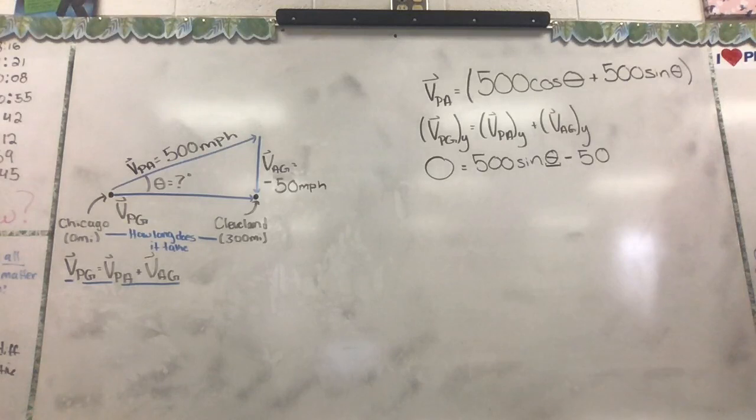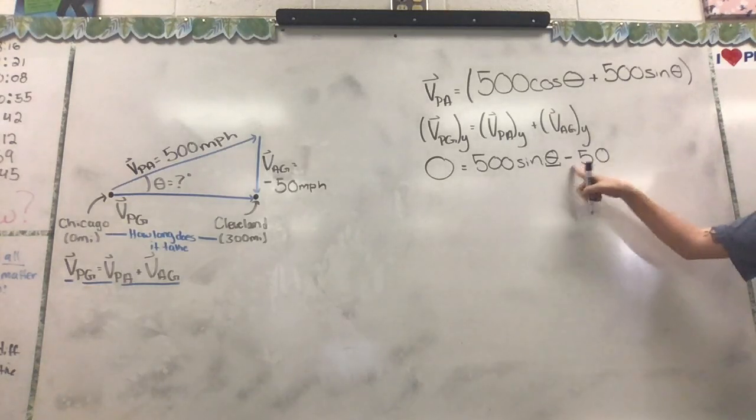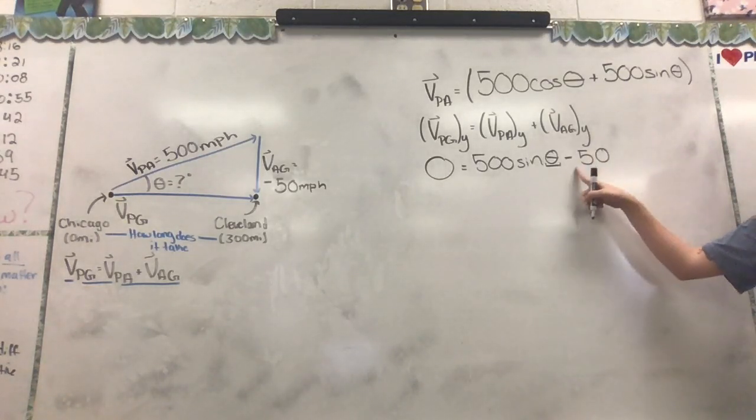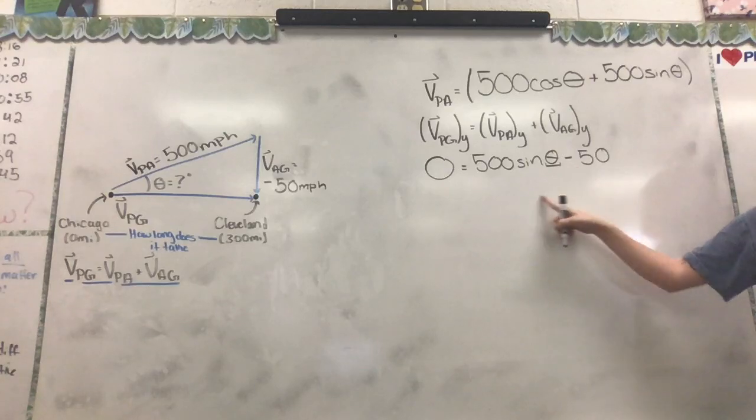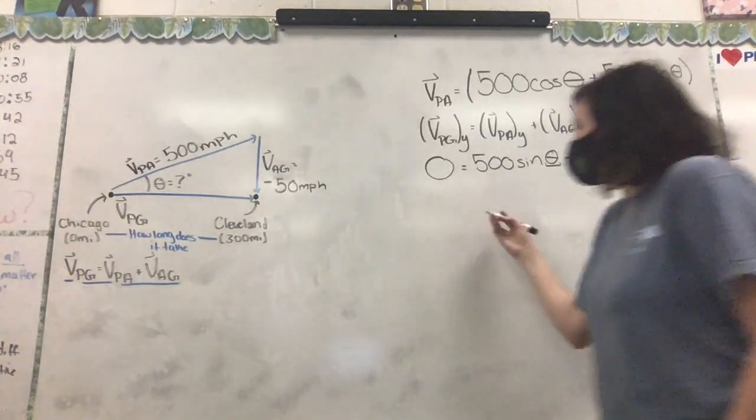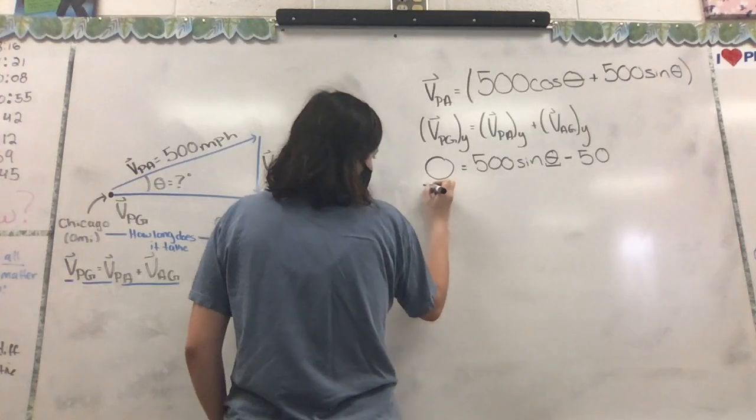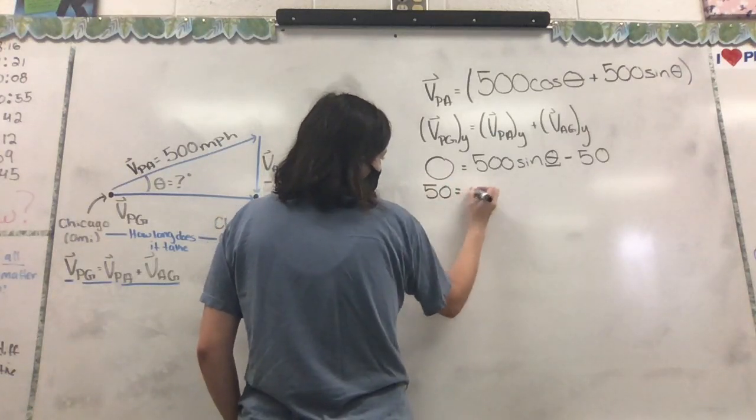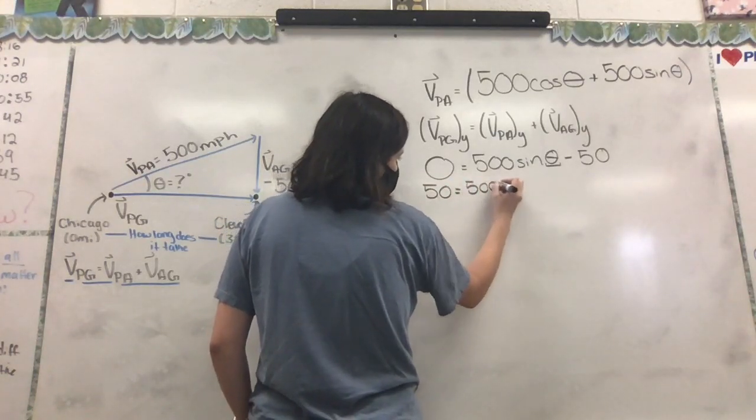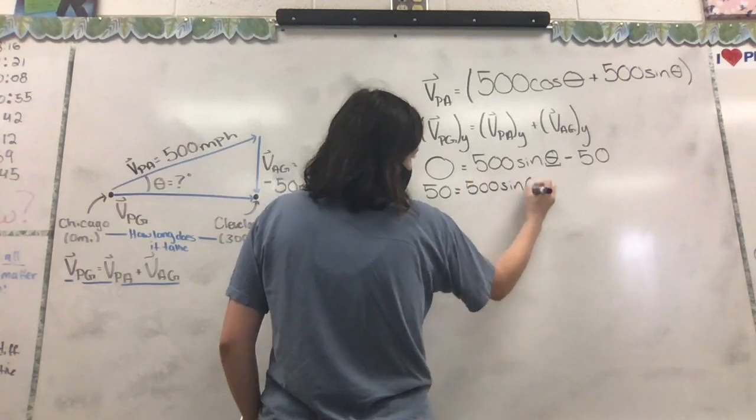It's the only thing we don't know is theta. The first thing we're going to notice with this now is that this 50 is getting subtracted from this term. So what are we going to do? We're going to add it over. So we're going to have 50 equals 500 sine of theta. Now what do we want to do?